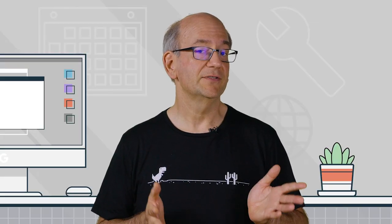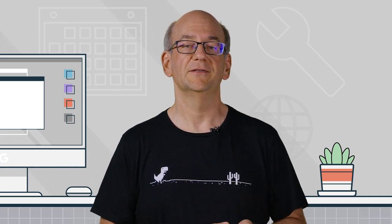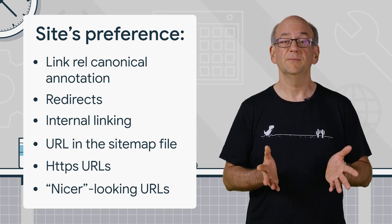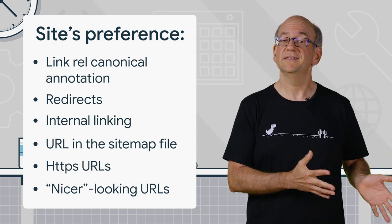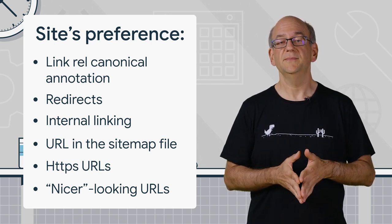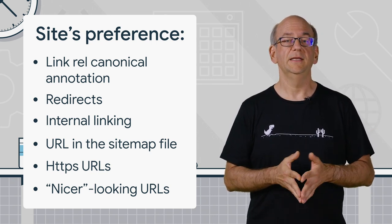So if you're a site owner and you have a strong preference regarding the URLs you want shown to users in search, first of all, you should make sure that you use those preferences consistently across your website. Ideally, search engines wouldn't even be able to stumble across any of those alternatives. If you have a preference, then stick to it. Along that line, make sure that all of the canonicalization factors we mentioned are similarly aligned. Make sure that internal links use your preferred URL format, that sitemap files only list preferred URLs, and that the rel canonical link elements on these pages match. The more you can be consistent, the more likely Google systems will follow your lead and use those too.